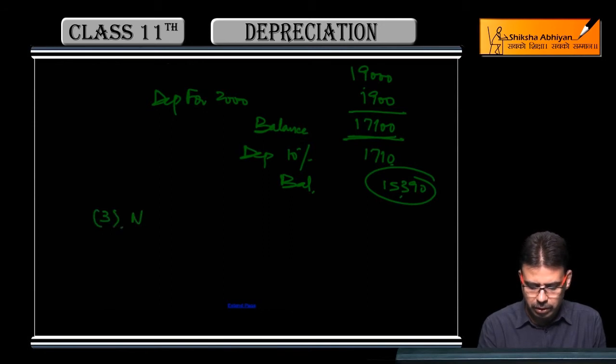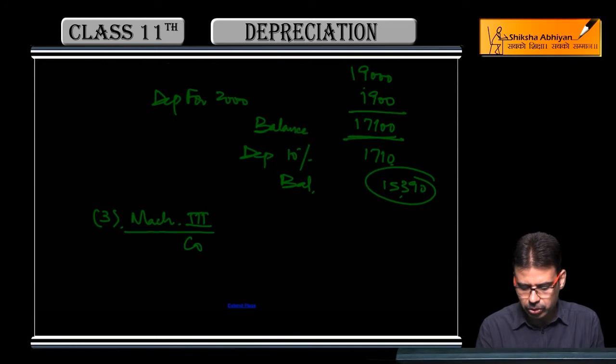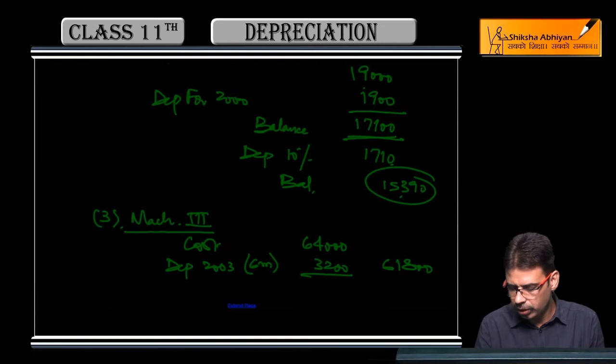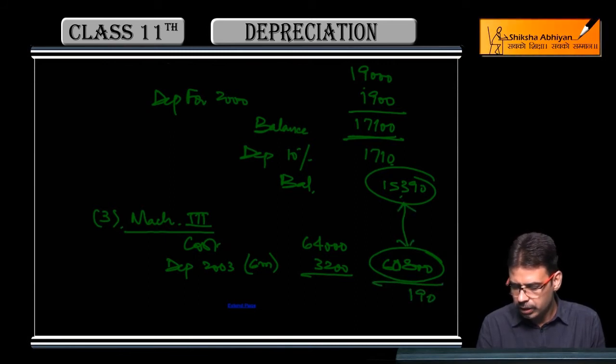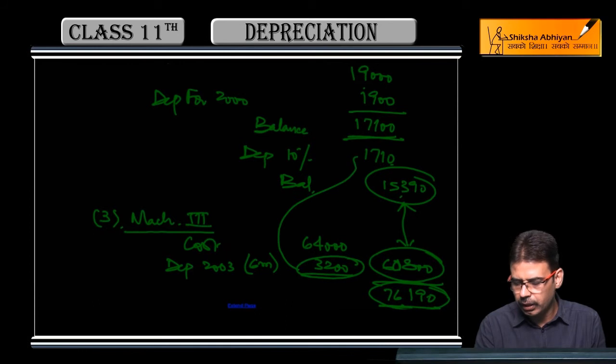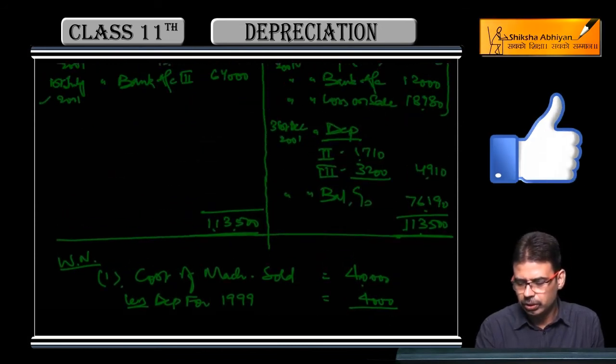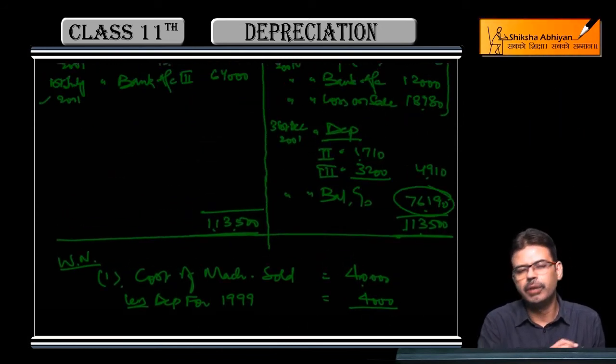And machinery 3: cost is 64,000, and current year depreciation for 2001, six months only, 3,200. So its balance is also remaining: 60,800. So this is your balance. If I total these two, the total is 76,190 - this should be the balance carried down. And this current year depreciation should be 1,710 and 3,200. And 76,190 is your balance.